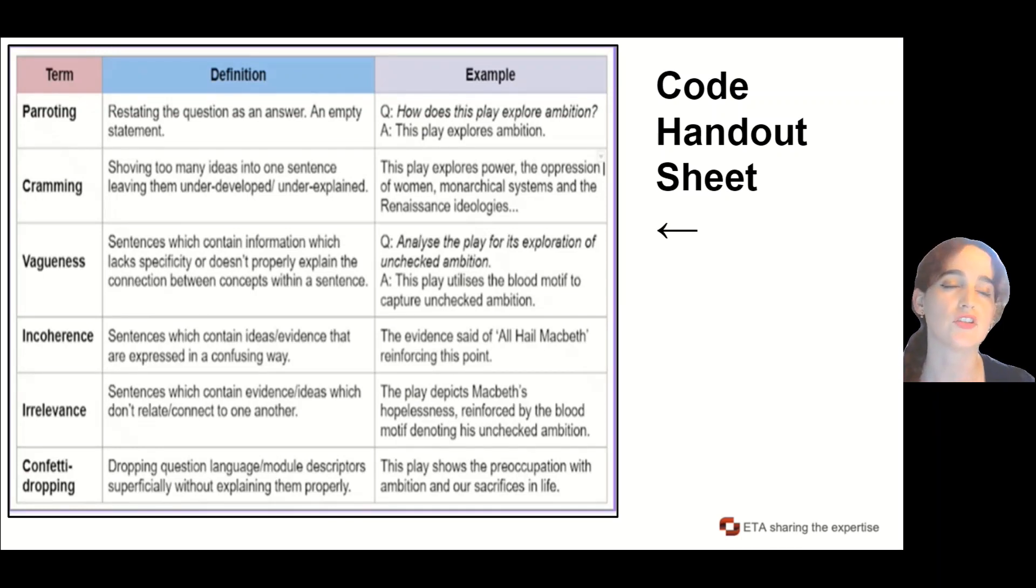For example, we have the term parroting, where the definition is when a student restates the question as an answer, like a bird just saying something back to you. An example might be: how does this play explore ambition? Answer: this play explores ambition. We can see here that this is an expression issue because it doesn't contain any new information—it's an empty statement.